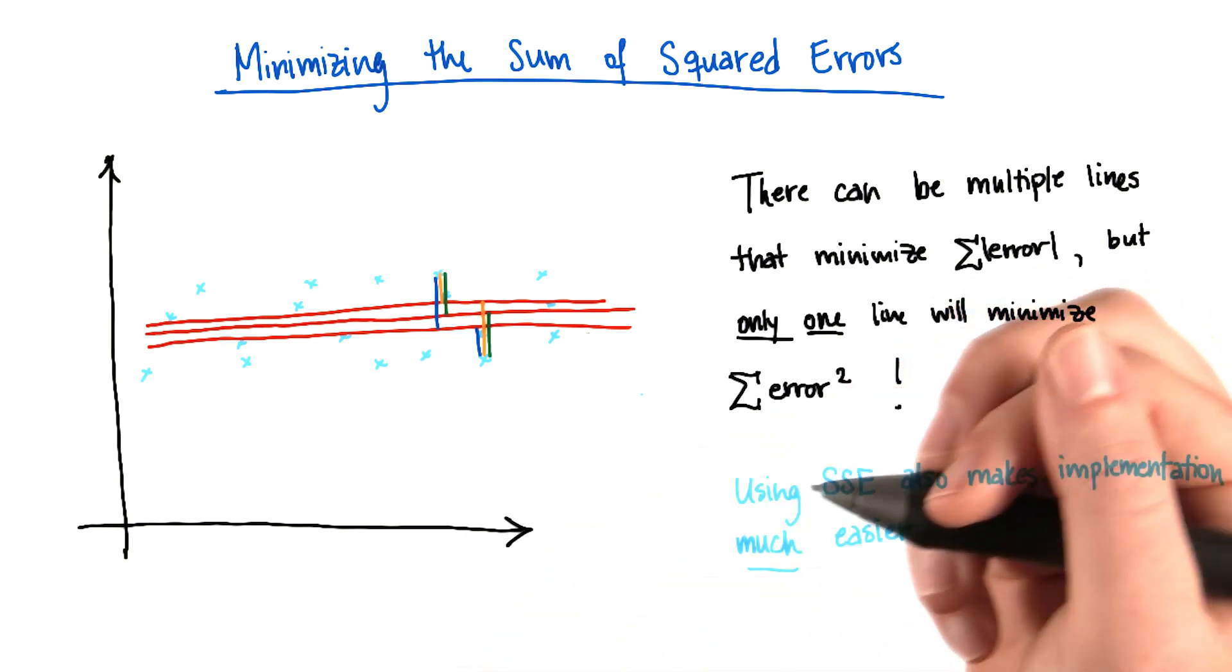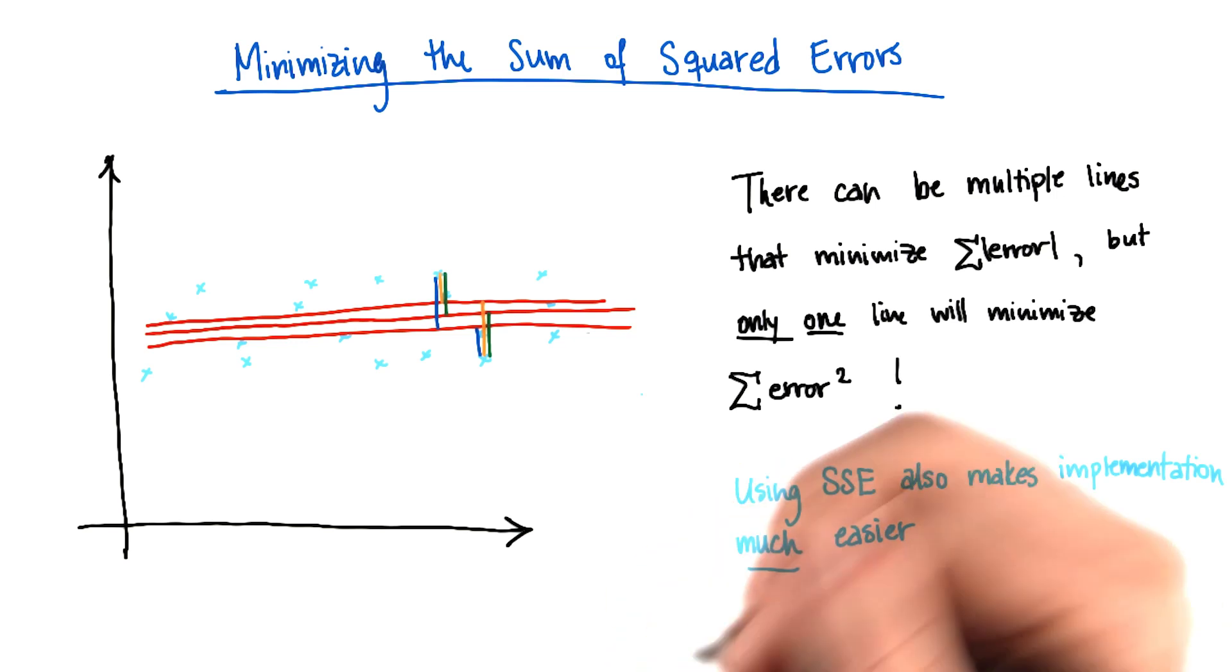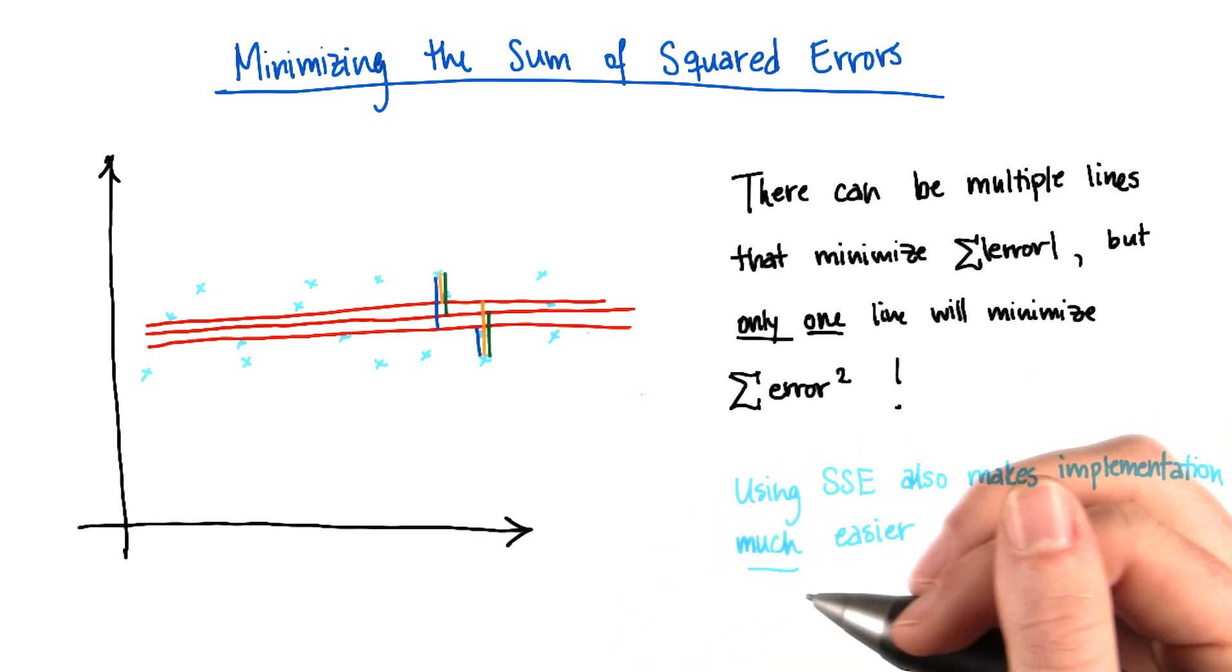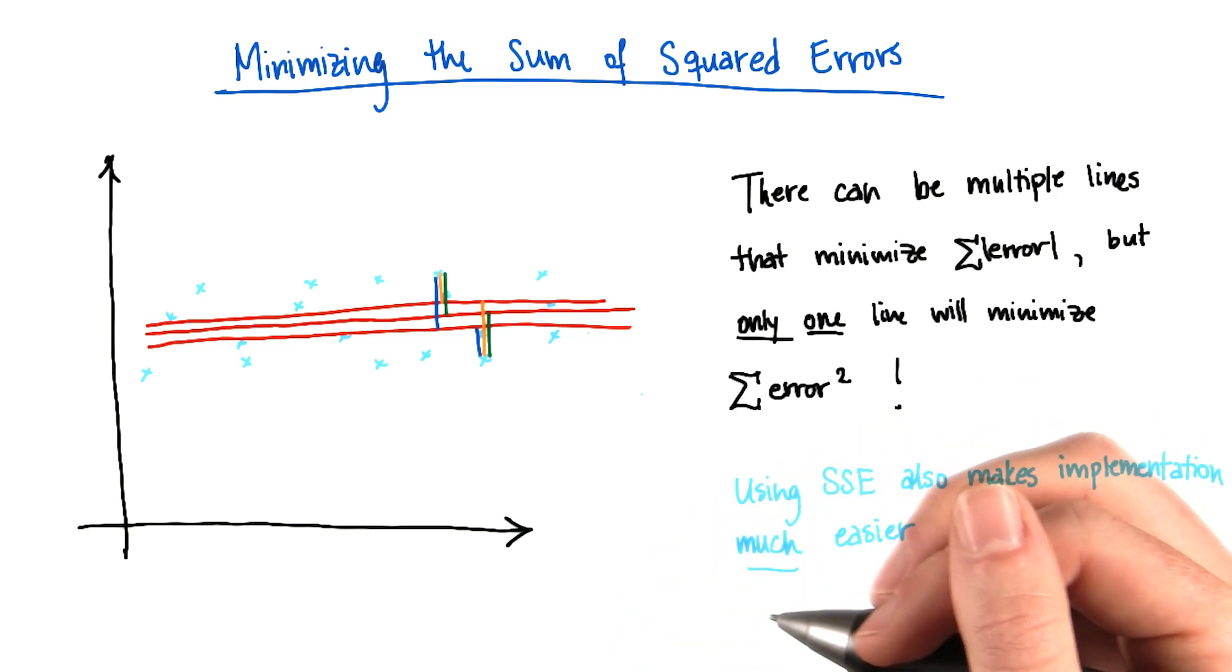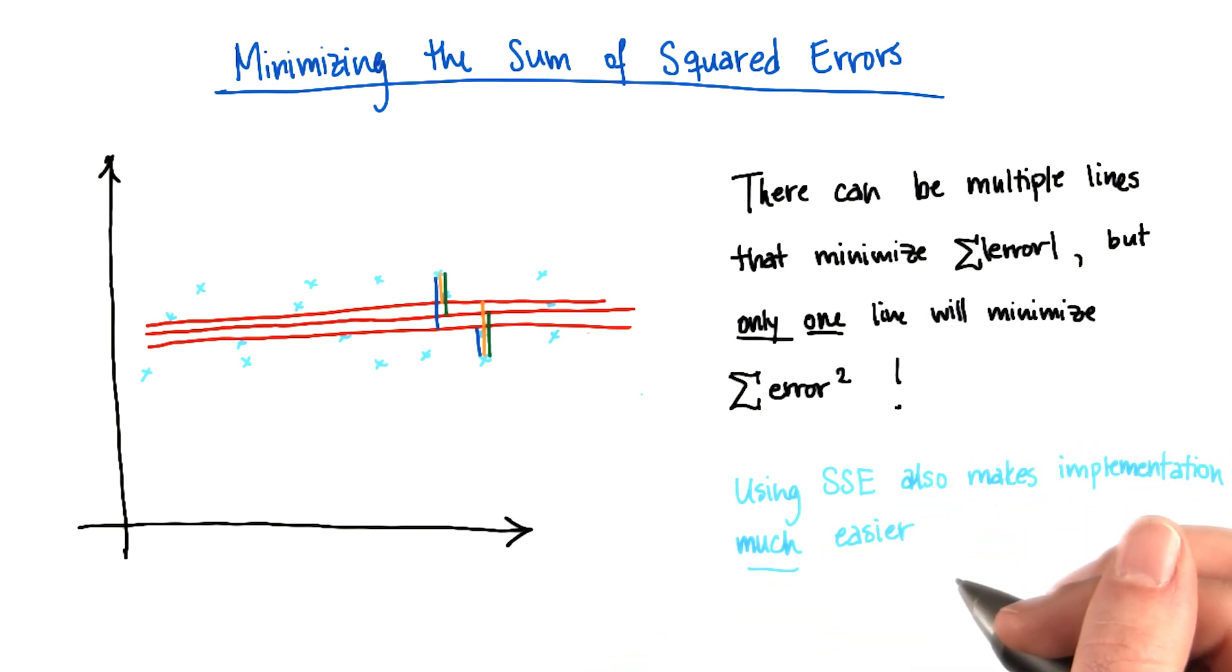But of course, if you're actually writing the code that goes in and does the linear algebra to find the regression, or maybe the calculus to find the result of what your regression answer should be, then this is a big concern to you. This is another reason why traditionally regressions are going to be minimizing the sum of the squared error, is because computationally it's just much easier to do that.